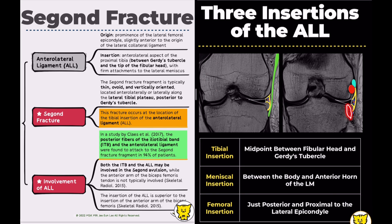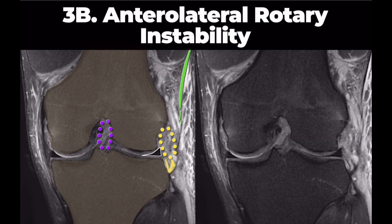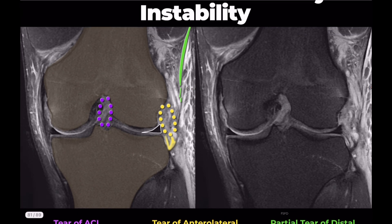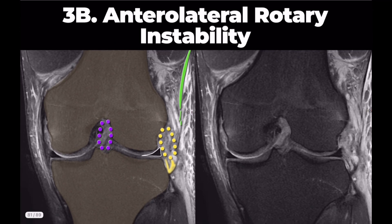Segond fractures are recognized as markers of anterolateral rotatory instability of the knee and are frequently associated with severe ligamentous injuries, most commonly involving the anterior cruciate ligament (ACL).